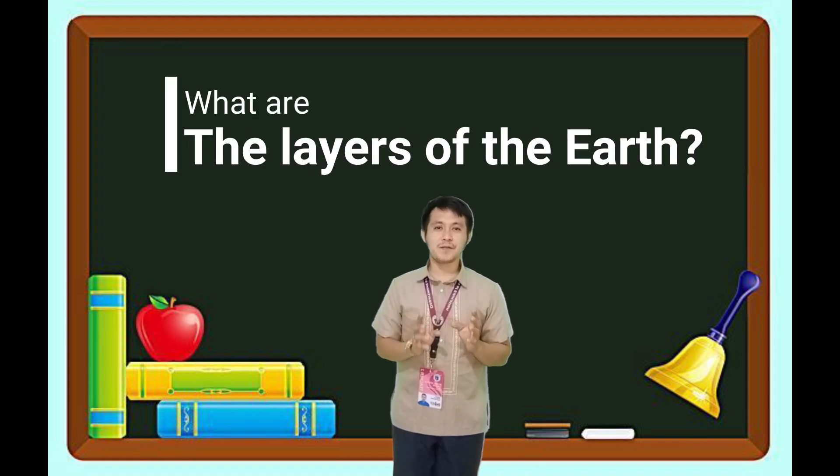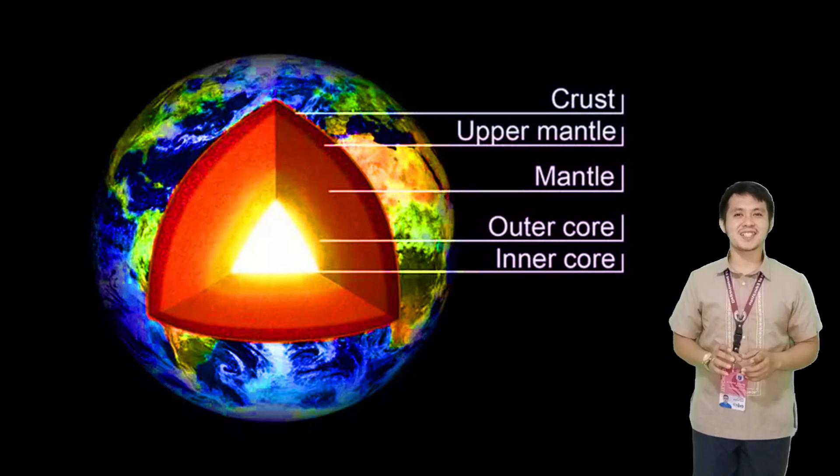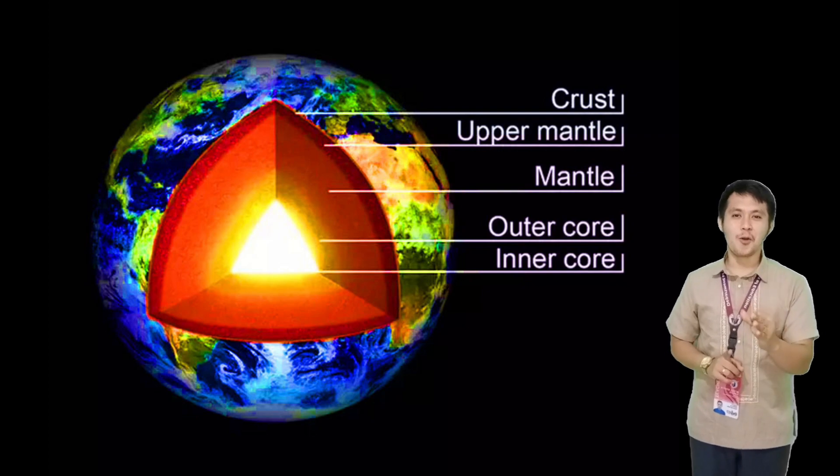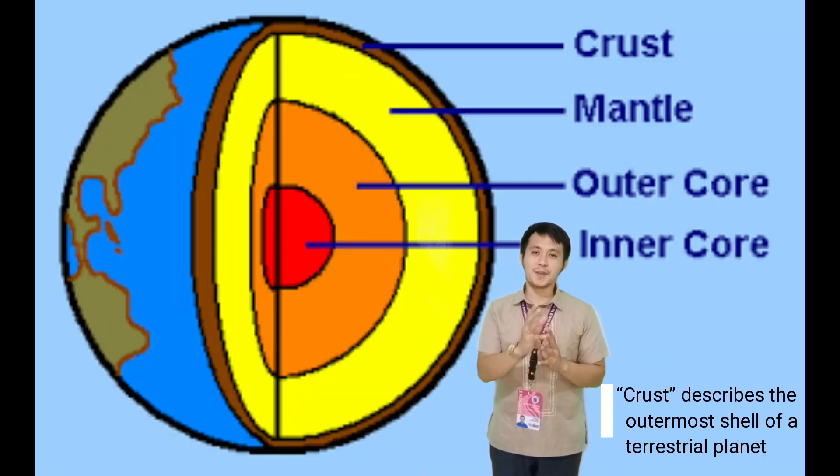Before we proceed to the source of heat, let's have a short review of layers of the Earth. Planet Earth has three main layers: the crust, the mantle, and core. The crust is the outermost layer of the planet.